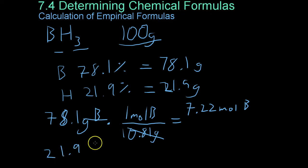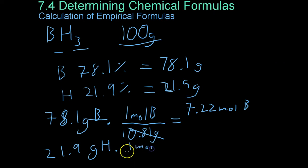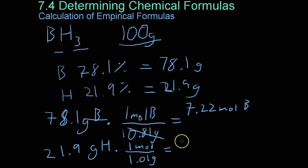and you end up with 7.22 moles of boron within this sample. And you do the same thing with hydrogen. So if you take the 21.9 grams times 1 mole of hydrogen is 1.01 grams, you get 21.7 moles of hydrogen.